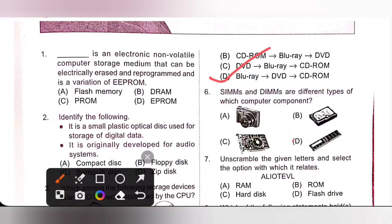Sixth one: SIMM and DIMM are different types of which computer component? SIMM and DIMM are two major types of RAM — Random Access Memory — standard for personal computers. SIMM stands for Single Inline Memory Module and DIMM stands for Dual Inline Memory Module. Option D, RAM, is the correct answer.